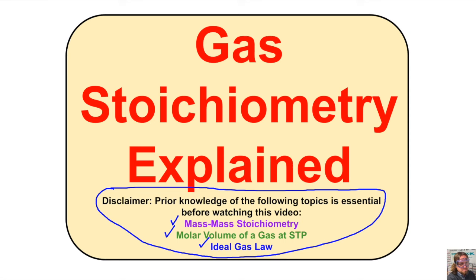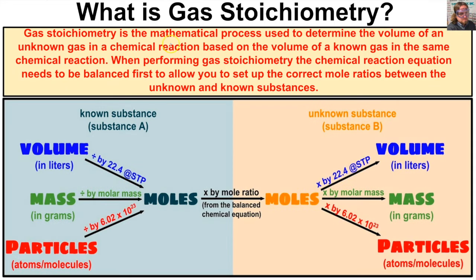So what is gas stoichiometry? Gas stoichiometry is the mathematical process used to determine the volume of an unknown gas in a chemical reaction based on the volume of a known gas in the same chemical reaction. When we perform gas stoichiometry, the chemical reaction always needs to be balanced first to allow you to set up the correct mole ratios between the unknown and known substances. Essentially, we use a diagram that helps us convert volume of known substance to volume of unknown substance.